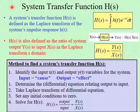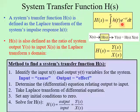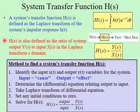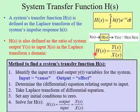Here is a more formal definition of a system's transfer function H of S. Mathematically, H of S is defined as the Laplace transform of the system's impulse response h of T, using the standard Laplace transform integral. H of S is also defined as the ratio of system output Y of S to the system input X of S in the Laplace transform domain. We have X of S going into our system with transfer function H of S, which outputs Y of S equal to H of S times X of S. Thus H of S is just the ratio of the output over the input.